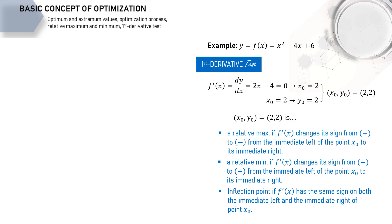What is the value of the first derivative when x is at the immediate left of x₀, or when x is less than x₀? It's negative. We may use x equals 0 or x equals minus 1, for instance — both are to the left of or smaller than 2. When x is 0, the first derivative is minus 4, a negative number. When x is minus 1, the first derivative is minus 6, also a negative number.